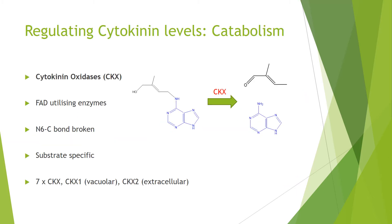Moving on to regulating cytokinin levels by catabolism, we start with cytokinin oxidase enzymes. These are FAD-utilizing enzymes that use the oxidizing power of FAD to break the bond between nitrogen 6 and the carbon atom of the isoprene unit. These enzymes are substrate-specific, which means the reaction won't work for things like 6-benzylaminopurine. Arabidopsis has 7 CKX enzymes with 1 vacuolar and 2 extracellular, illustrating subcellular localizational differences between the different isozymes.